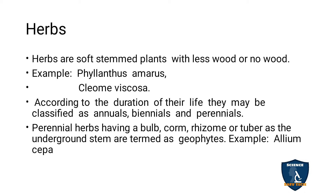Annuals means the plant which completes its life cycle in one year. The plant which completes the life cycle in two years is called biennial. The plant that lives for many years is called perennial. The perennial herbs include bulbs — for example, onion — corm, Colocasia, rhizome such as ginger, and tuber such as potato.